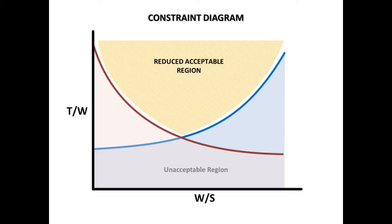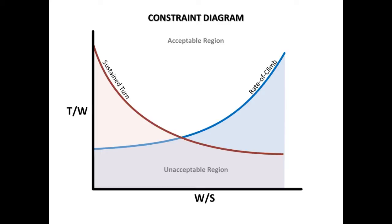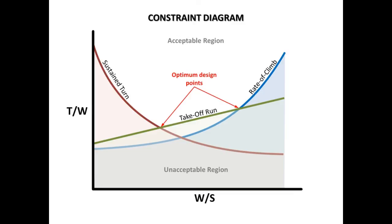Let's consider a third property — this could be the take-off distance. Again, combinations above the isopleths are acceptable, and below are not. It is of importance to realize that the two corners of the acceptable region are of great importance, as they represent optimums. In particular, the lower-left one represents the lowest wing loading and thrust-to-weight ratio that meets all the requirements. It is the true optimum. We would be wise to consider that combination the one to pursue in our design. By plotting the constraints in this fashion, we can easily identify all combinations of wing loading and thrust-to-weight ratio that allow all customer requirements to be met.